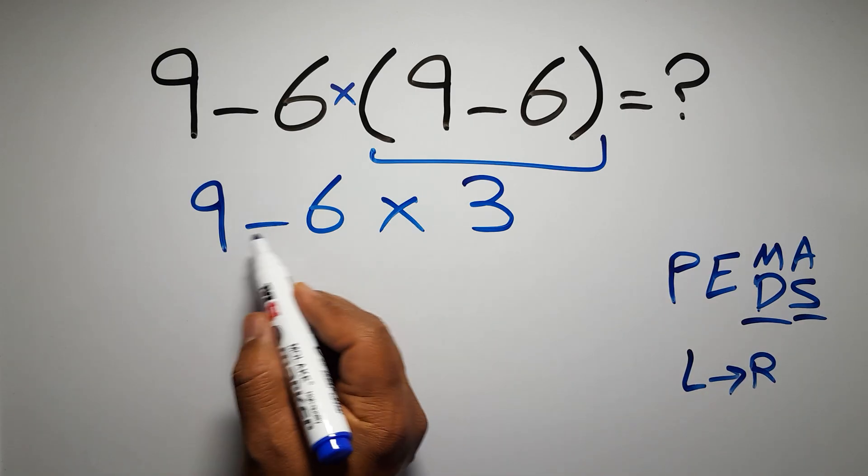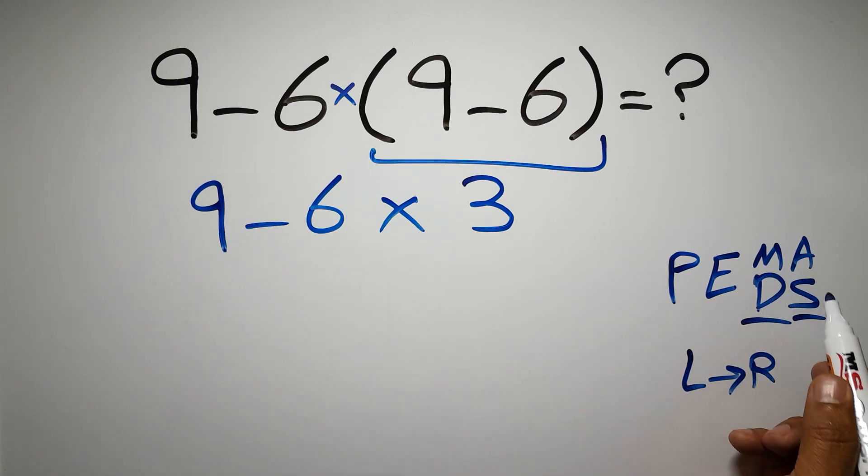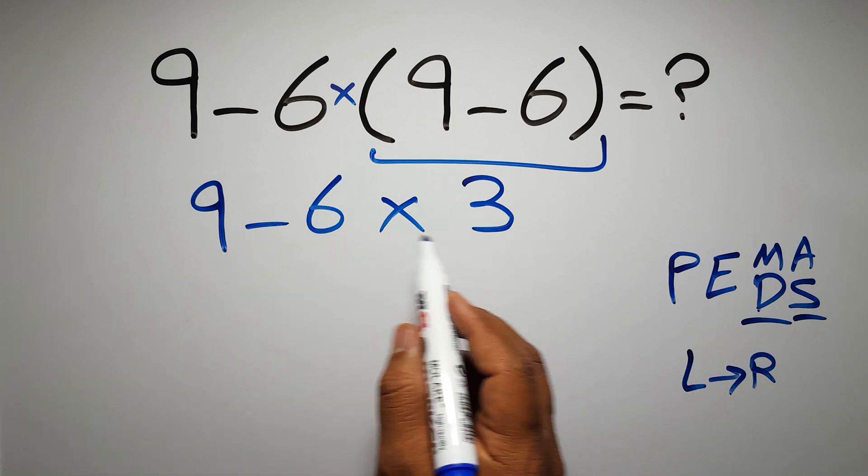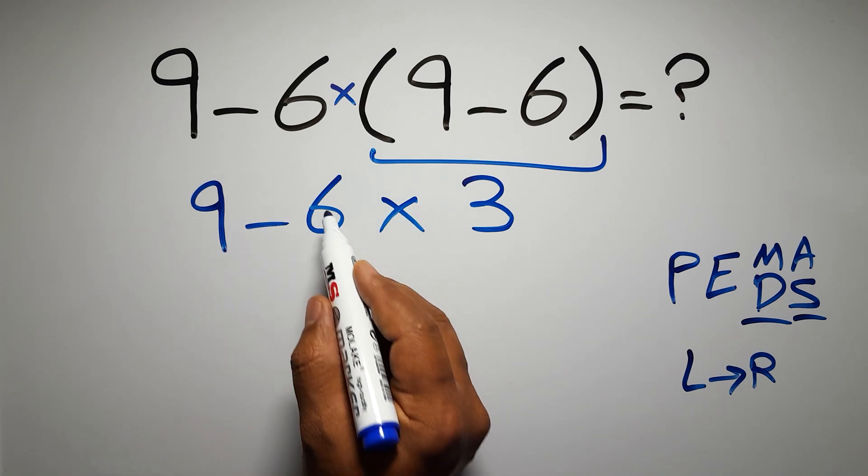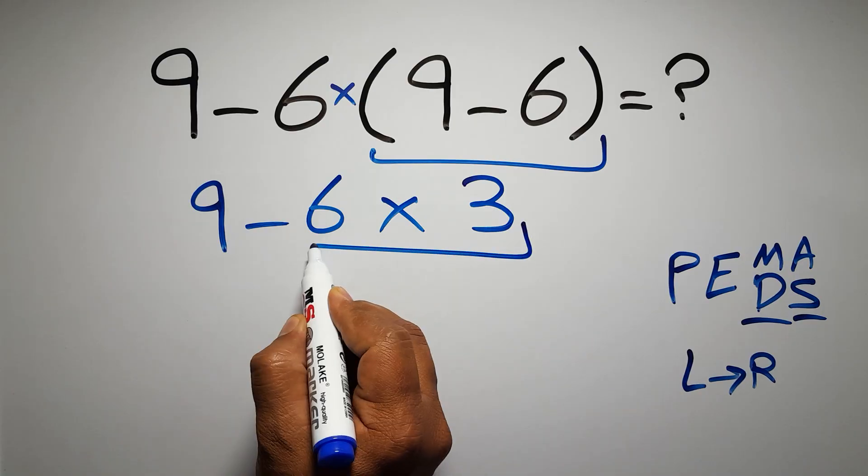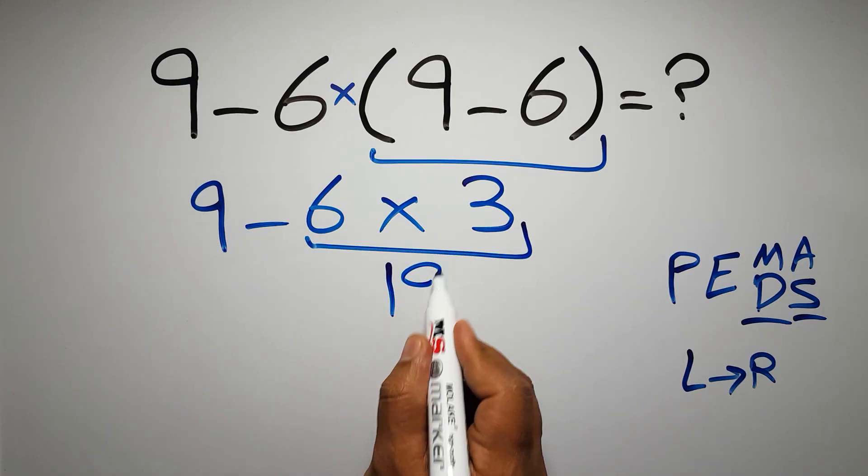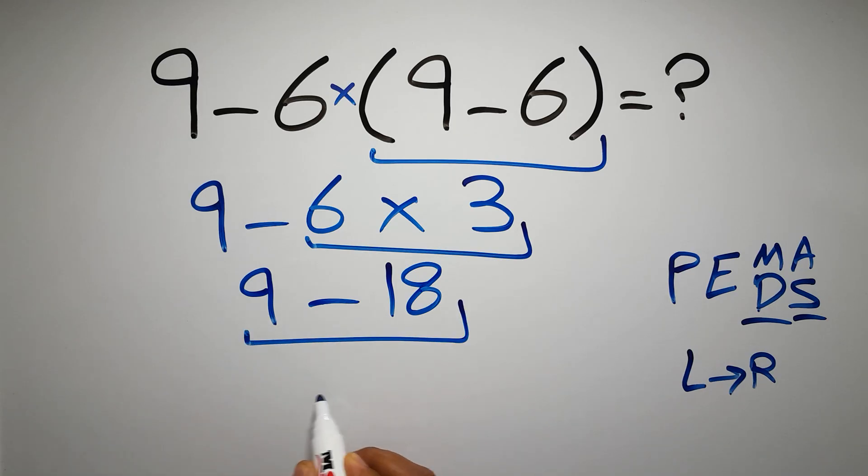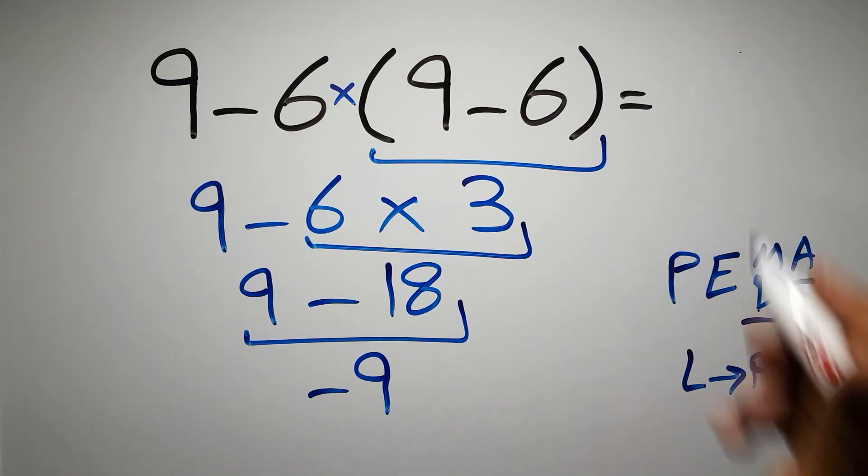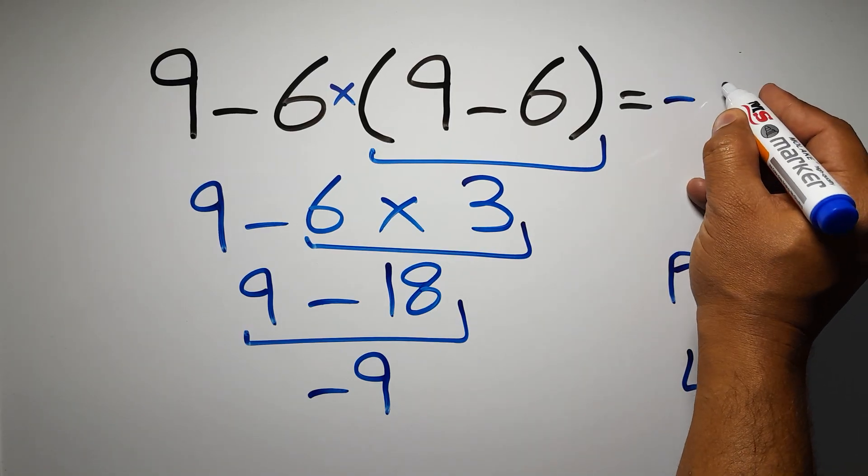Multiplication comes before subtraction, so here first we have to do this multiplication, then this subtraction. 6 times 3 gives us 18, so 9 minus 18 which equals negative 9. And this is our final answer to this problem. The correct answer is negative 9.